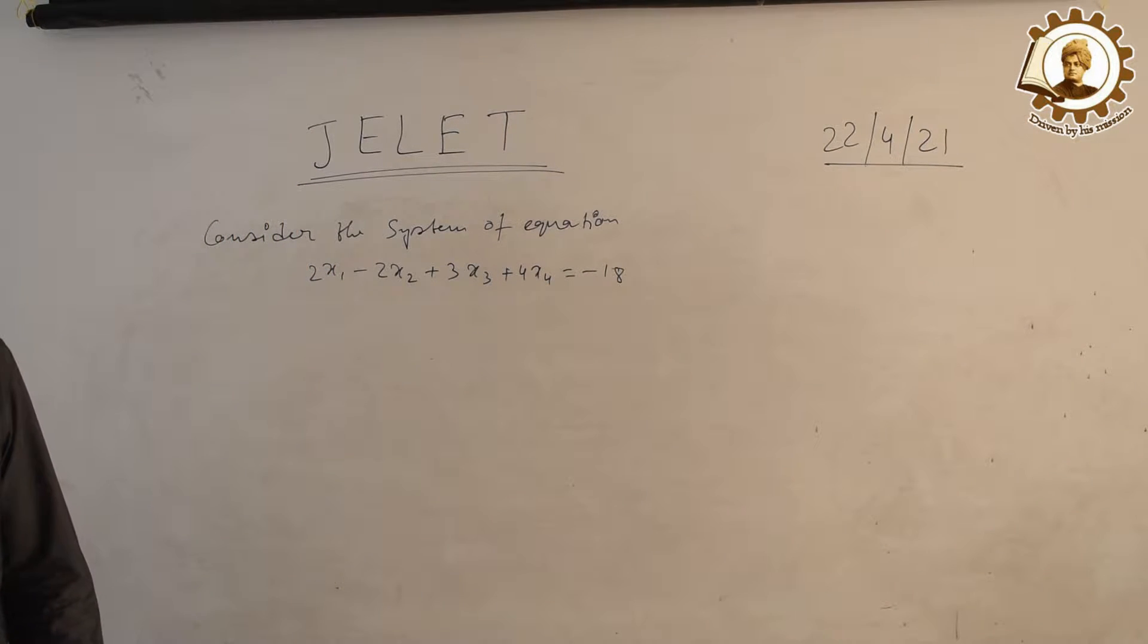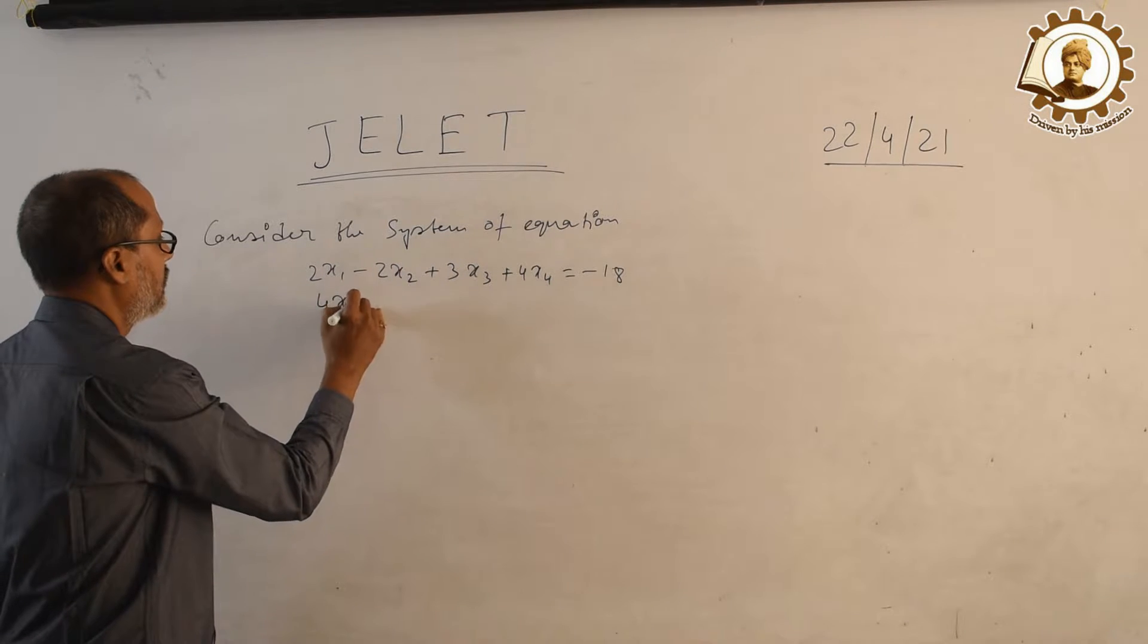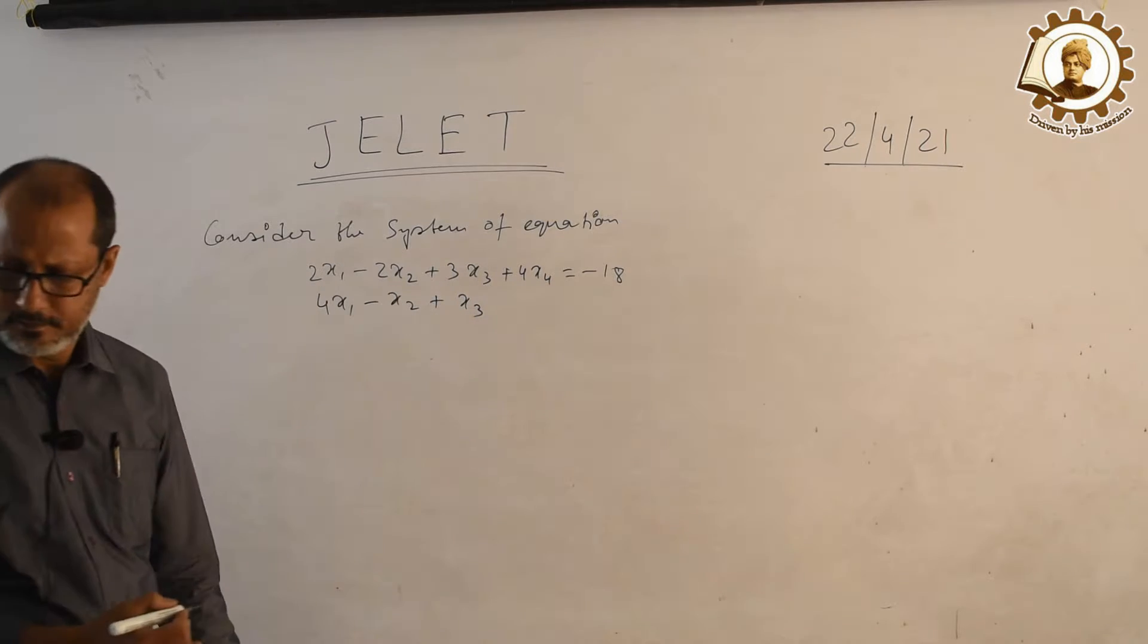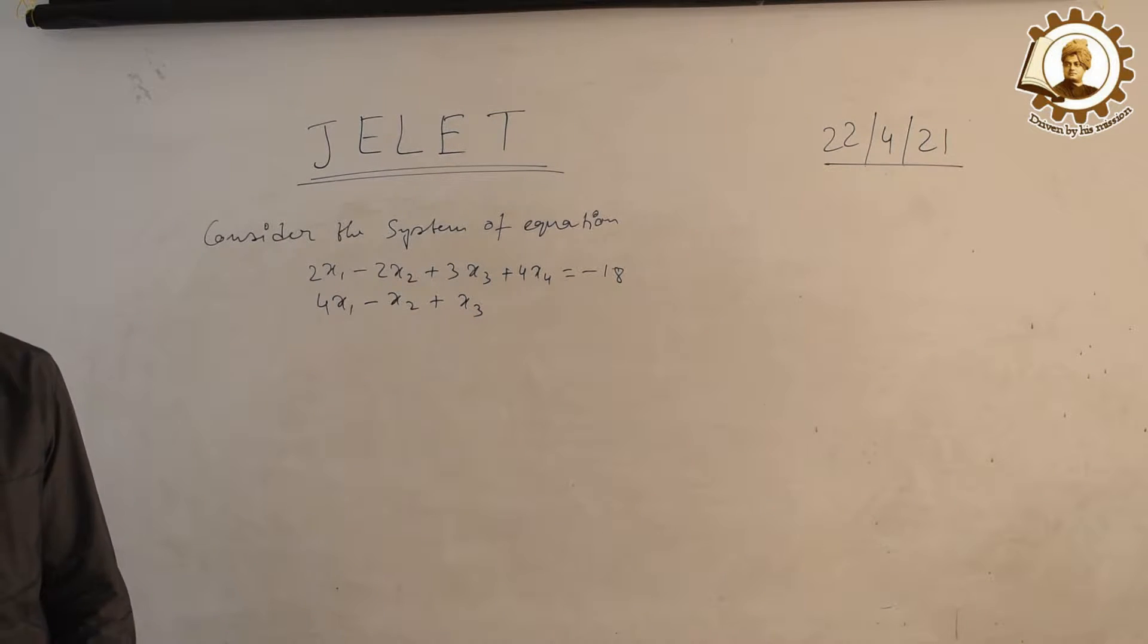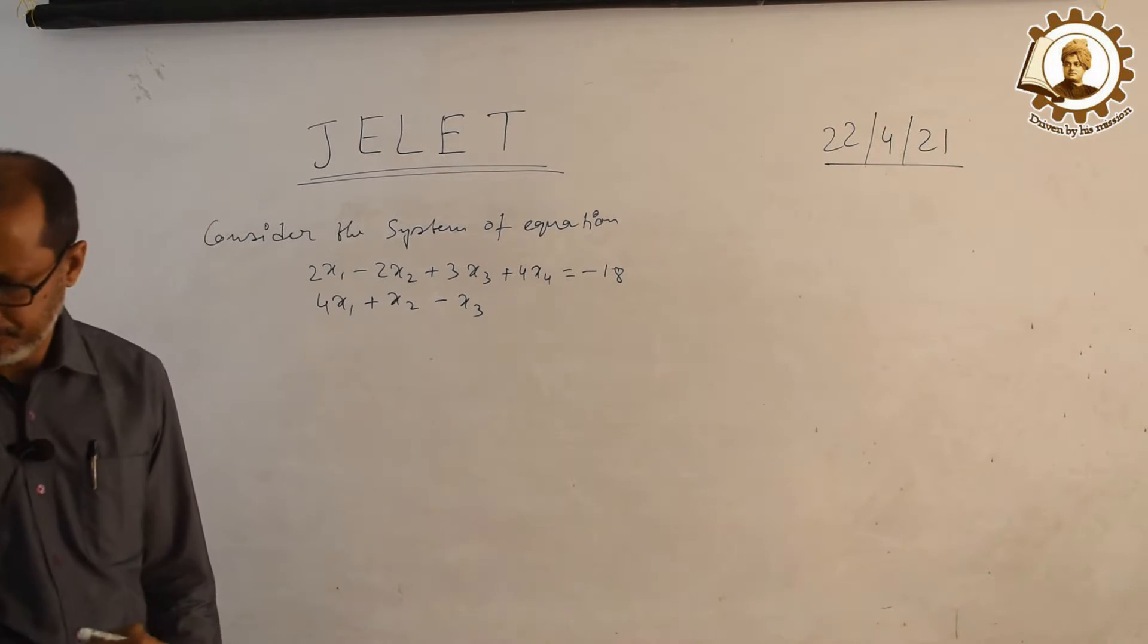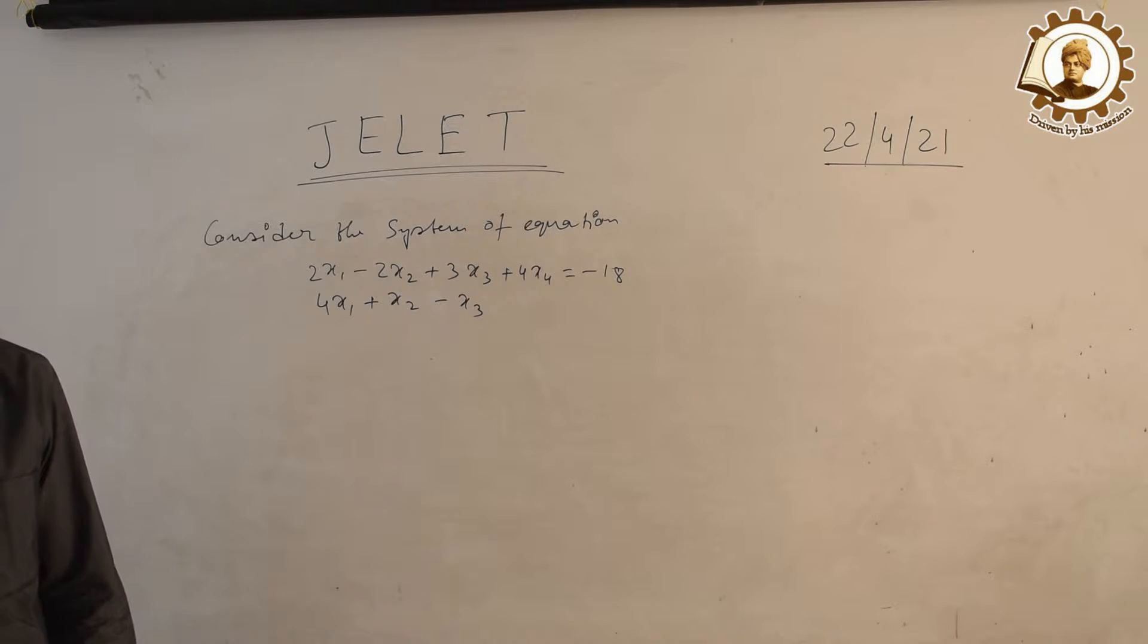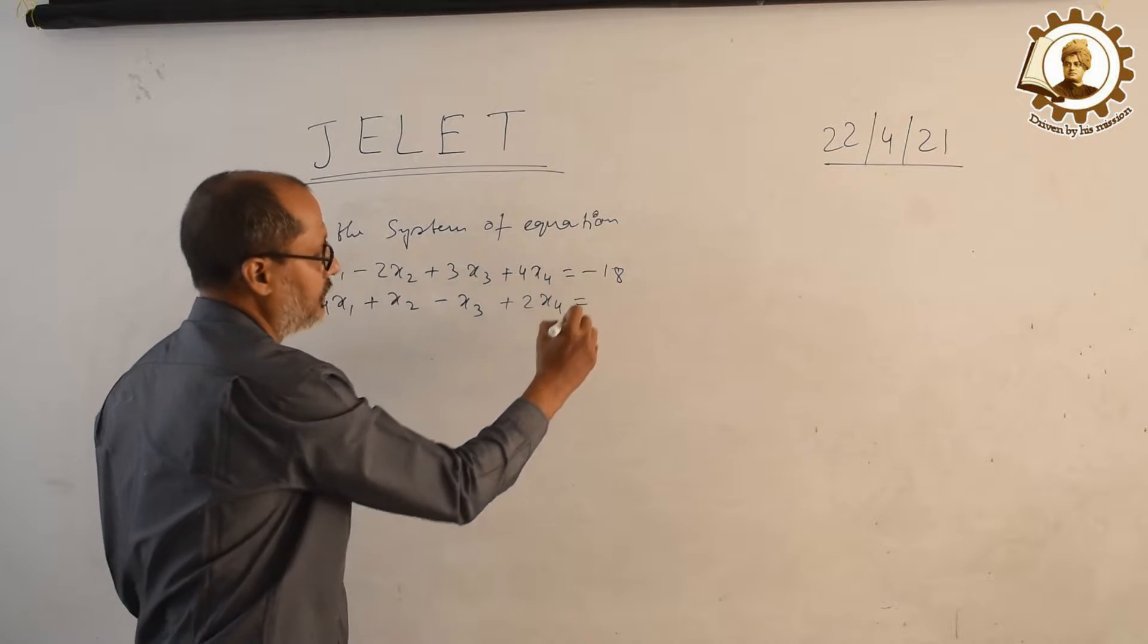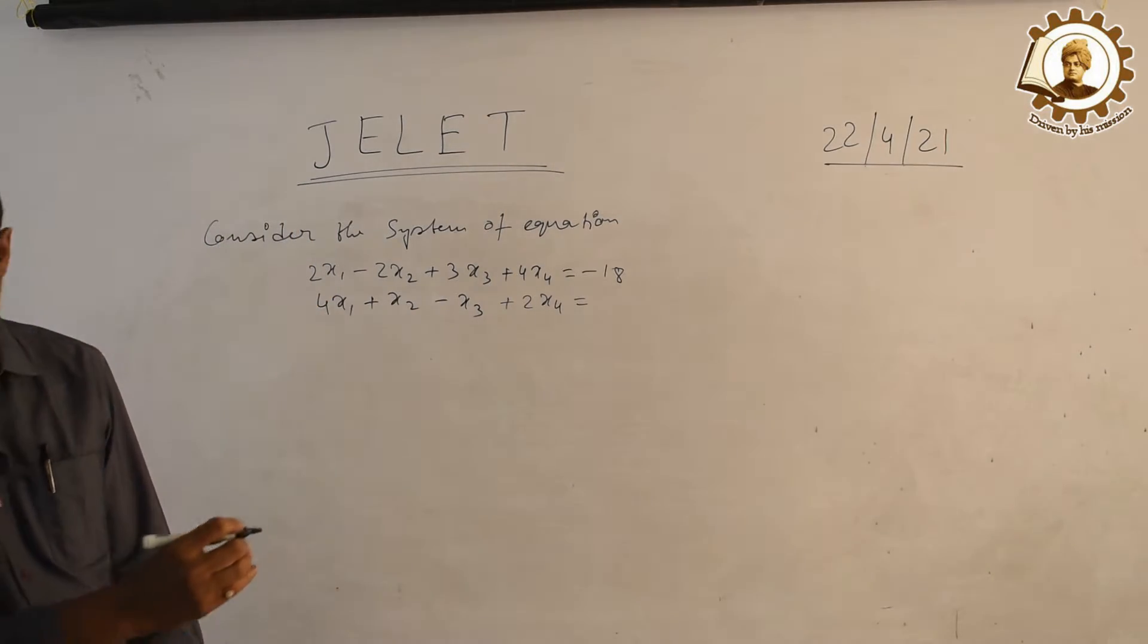4x1 plus x2 minus x3 plus 2x4 equals minus 11.